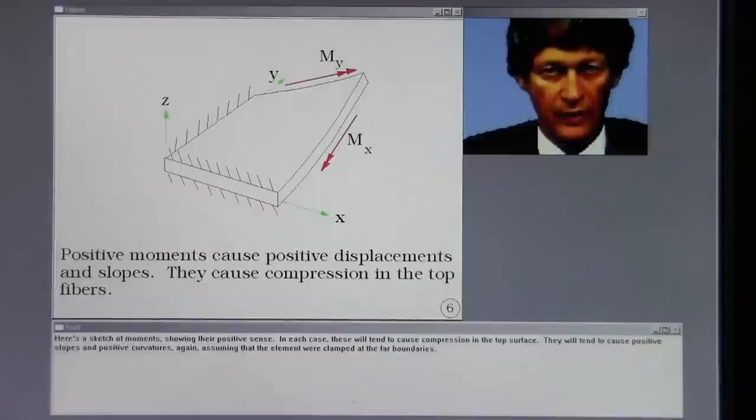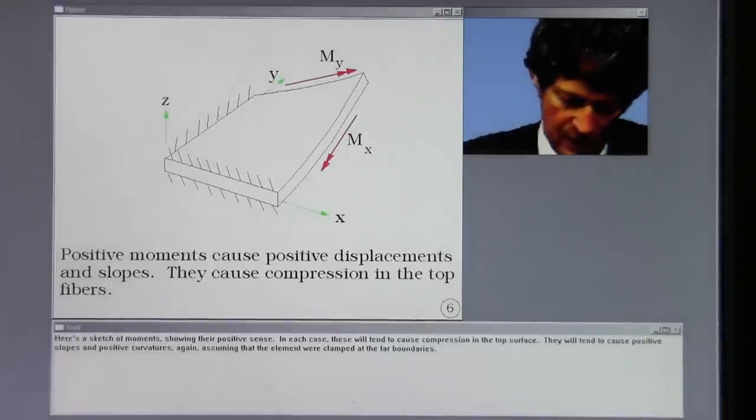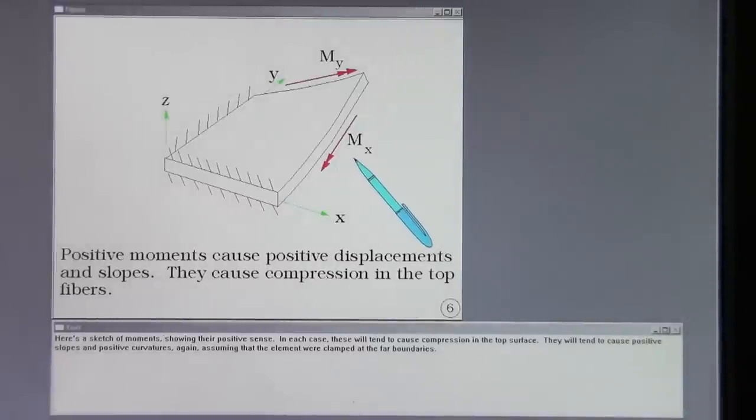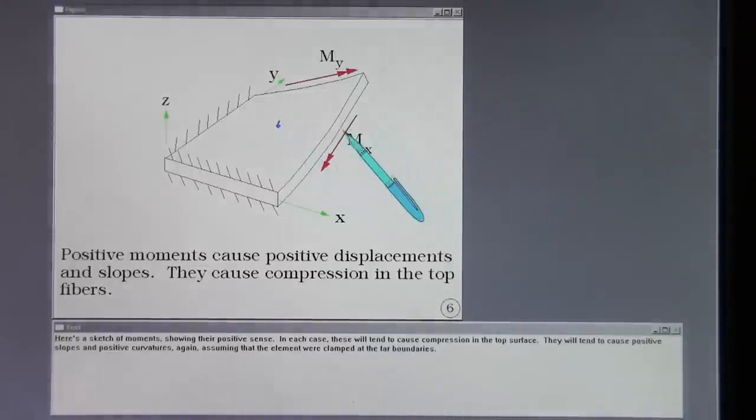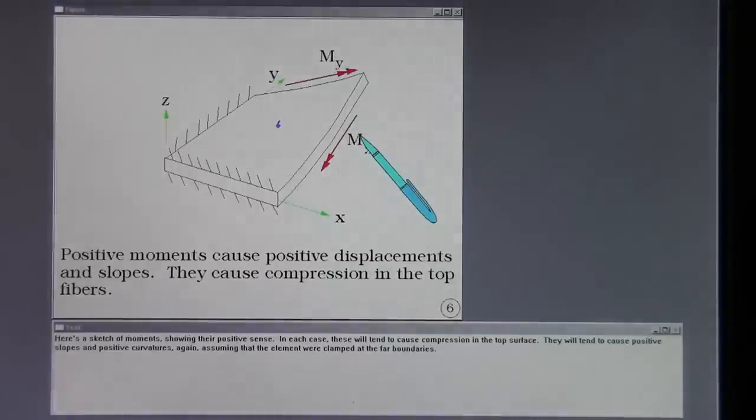Here's a sketch of moments showing their positive sense. In each case, these will tend to cause compression in the top surface. They will tend to cause positive slopes and positive curvatures, again, assuming that the element were clamped at the far boundaries.